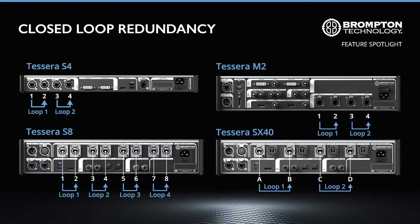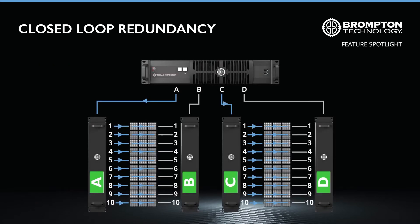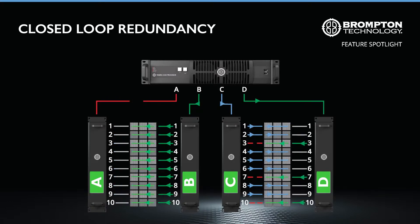Similarly, for the SX40 processor, the loop is created between the adjacent trunk ports — so trunk A to trunk B, and trunk C to trunk D. For the Tessera SX40, closed loop redundancy also works for individual ports on the Tessera XD distribution units. If communication errors were to occur on one or more strings of the primary XD units, the secondary XD units would immediately take over where needed.